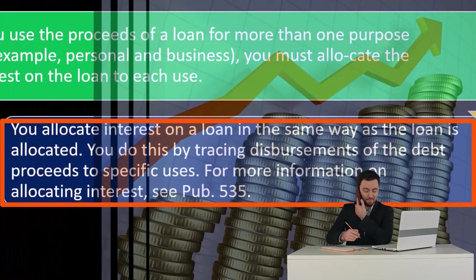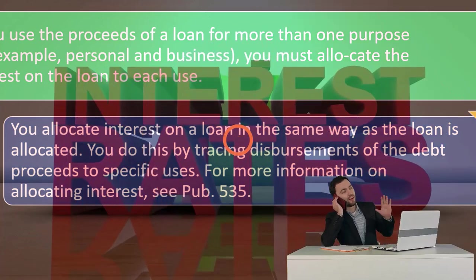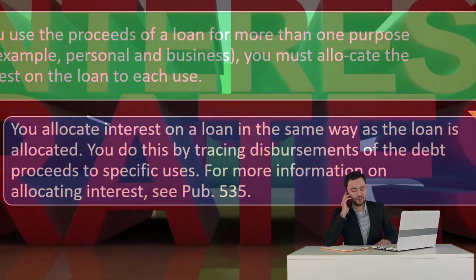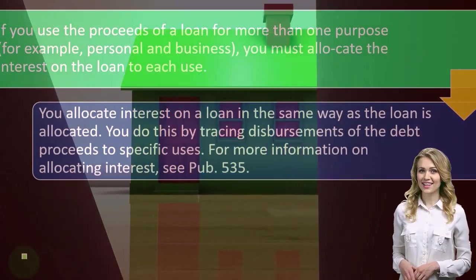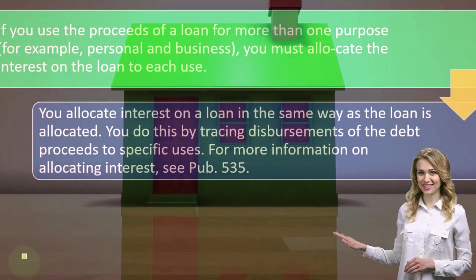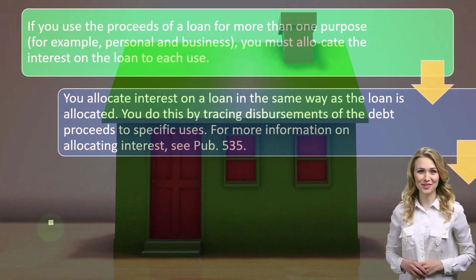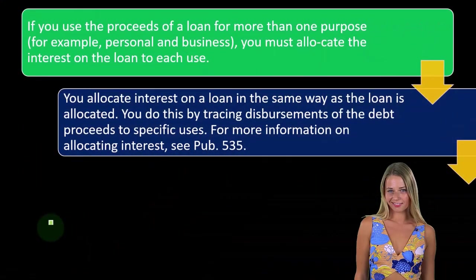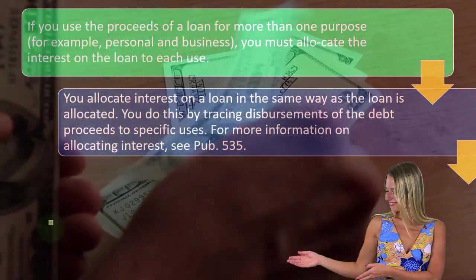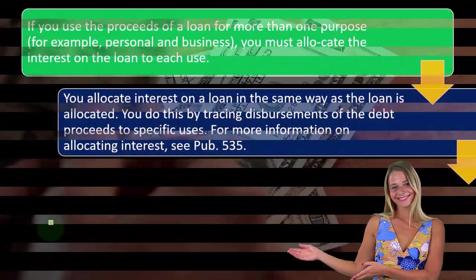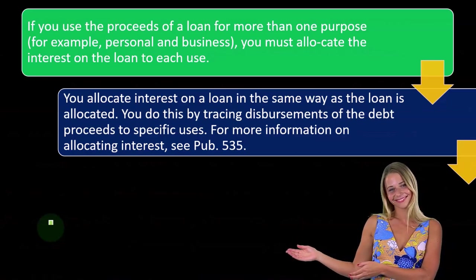You allocate interest on a loan in the same way the loan itself is allocated, by tracing disbursements of the debt proceeds to specific uses. Conceptually, if you took out a $100,000 loan and paid 40% for business use and 60% for personal use, you would use those same ratios on the interest payments. For more information, see Publication 535 on allocating interest.